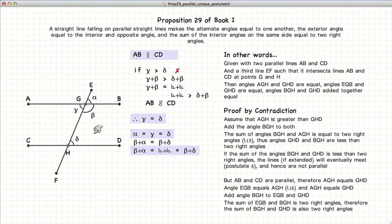So there we have demonstrated that when AB and CD are parallel, gamma equals delta, alpha equals delta, and beta plus delta equals 180 degrees.